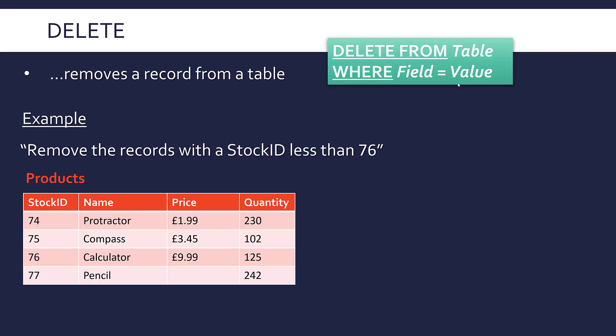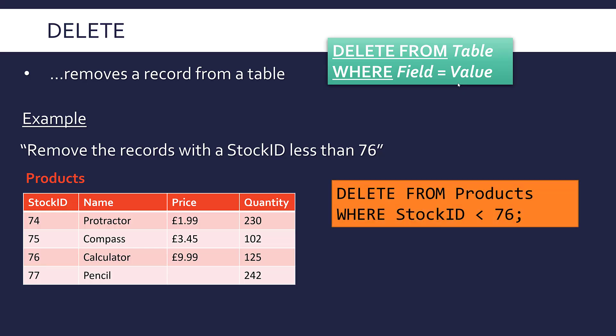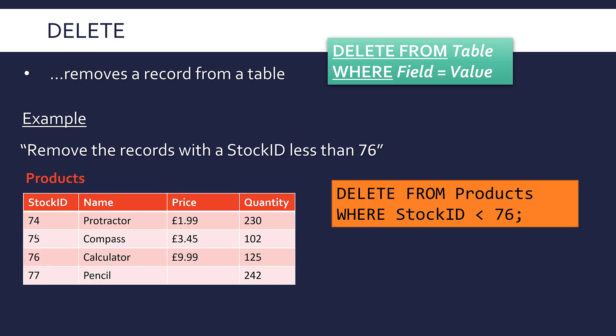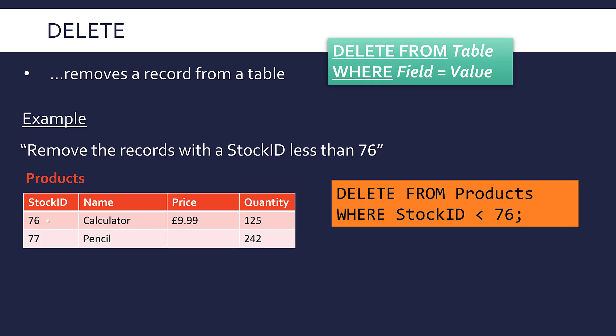So let's say in this table, I want to remove records with a StockID less than 76. So what I would do is a query like this. DELETE FROM Products, my table name, WHERE StockID is less than 76, which is what I've asked for in my question. Now what this will do, we'll go through the table, go through the records. And where the StockID is less than 76, it's going to delete those. So it's going to get rid of 74 and 75. And those entire records go, it doesn't just get rid of that one box. It gets rid of all of those records. And so we're left with just these final two.